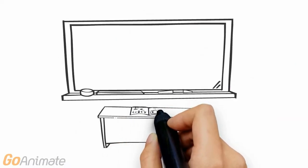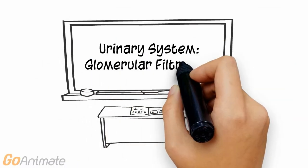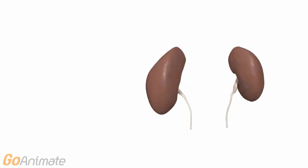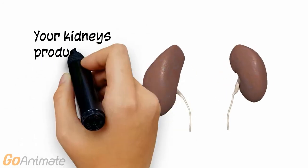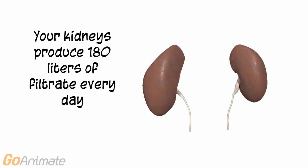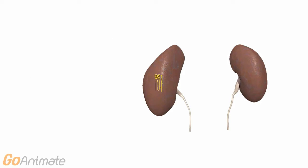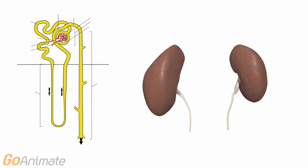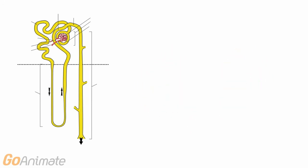Let's learn about glomerular filtration. Your kidneys produce 180 liters of filtrate every day. All of this filtrate is produced in a microscopic structure called the nephron.